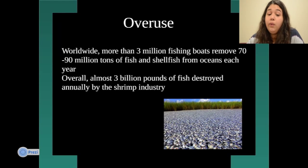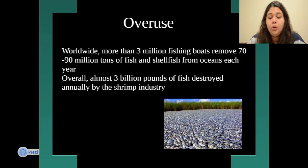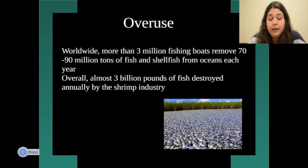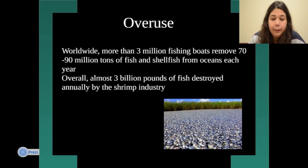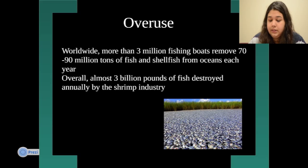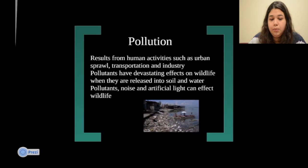There is also overuse. Worldwide, more than three million fishing boats remove 70 to 90 million tons of fish and shellfish from the oceans each year, decreasing our biodiversity. Overall, almost three billion pounds of fish are destroyed annually by the shrimp industry. This overuse of fishing causes more animals to die.